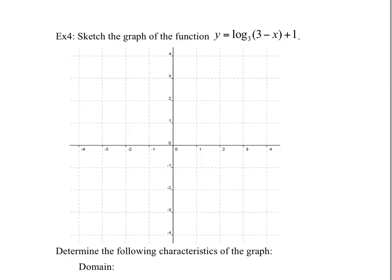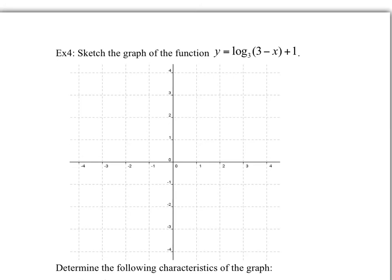On the last example, we sketch the graph of y equals log base 3 of (3 − x) + 1. We have a value in front of x that's not 1 — it's negative 1. My suggestion is to factor this. So y equals log base 3 of −(x − 3) + 1. Our log base 3 parent graph passes by (1,0) and (3,1). Now we've got to identify the transformations.